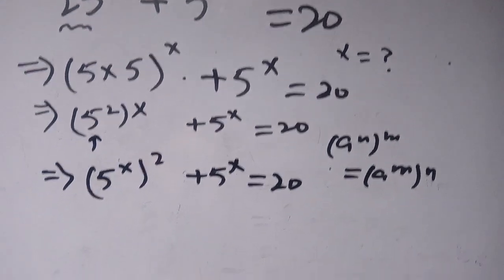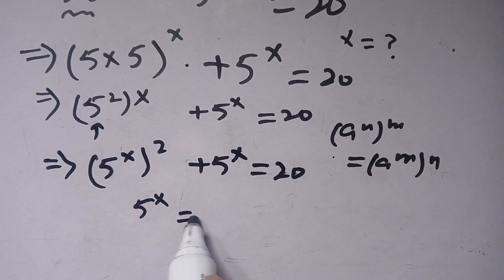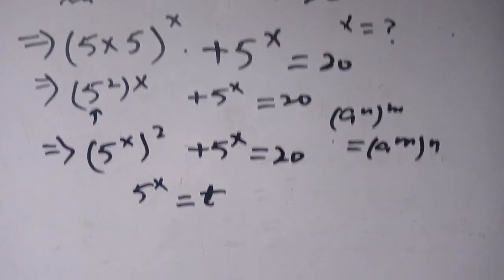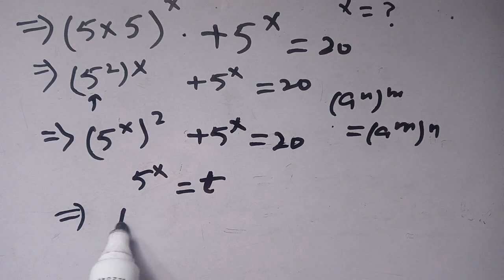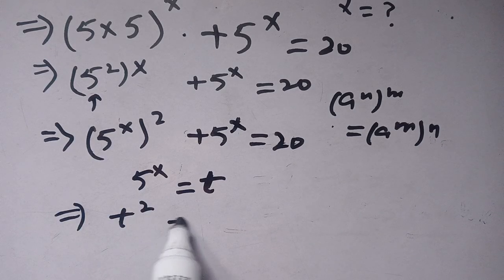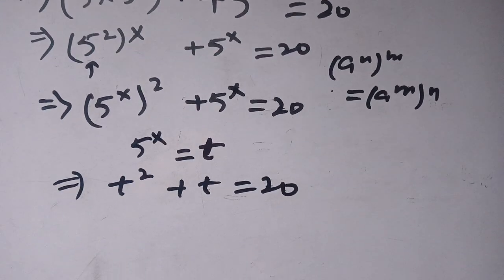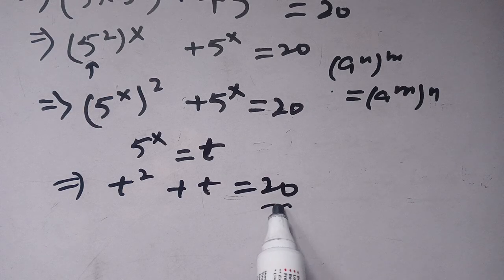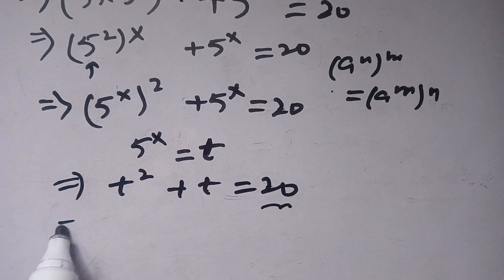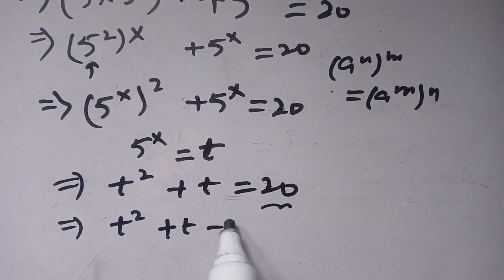Now for more simplification, let us consider that 5 power x is equal to t. It becomes t squared plus t is equal to 20. Now we shift 20 from the right-hand side to the left-hand side, so it becomes t squared plus t minus 20 is equal to 0.